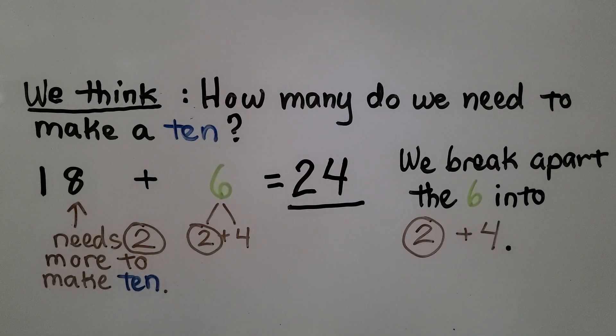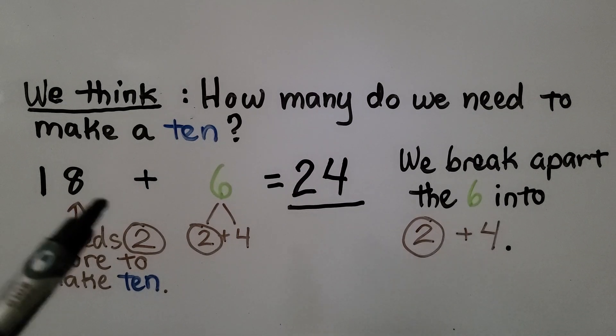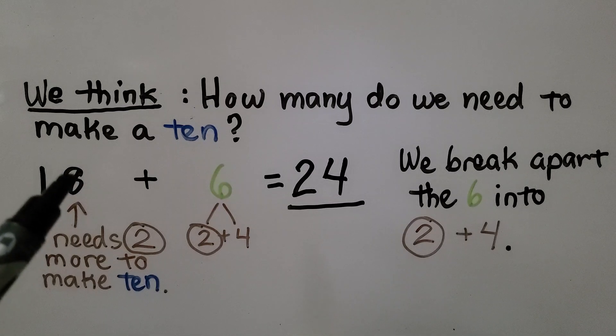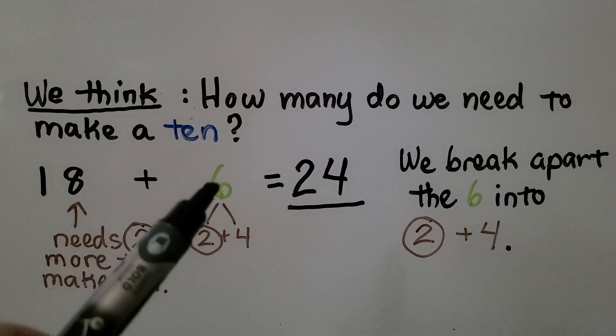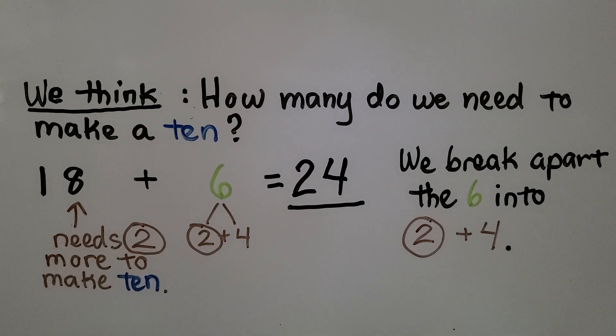So 18 plus 6 is equal to 24. We break apart the 6 into a 2 and a 4 because we asked ourselves what the 8 needed to become a ten. It needed 2. So that's one of the numbers the 6 needs to be broken into.